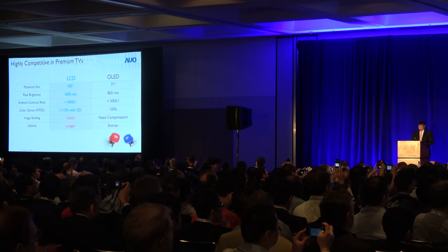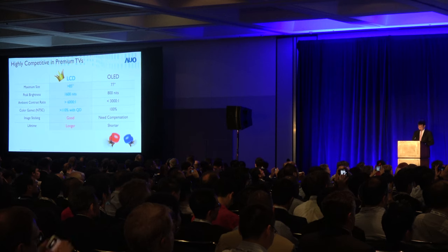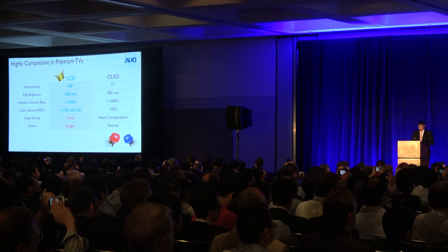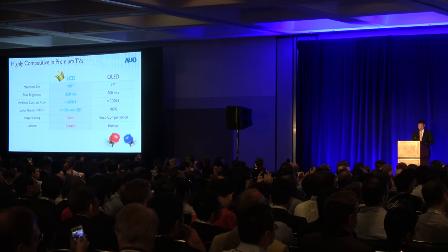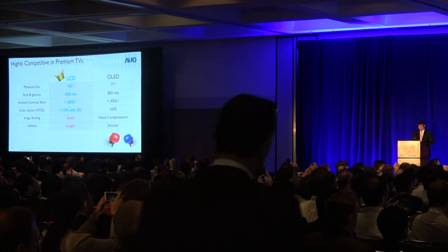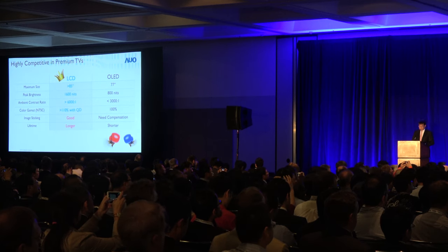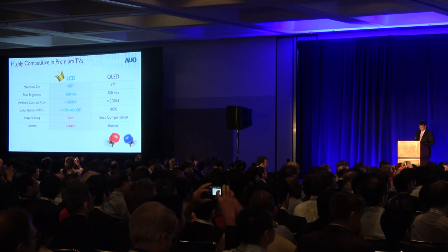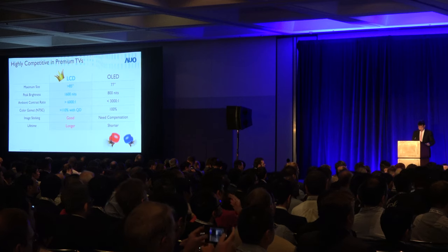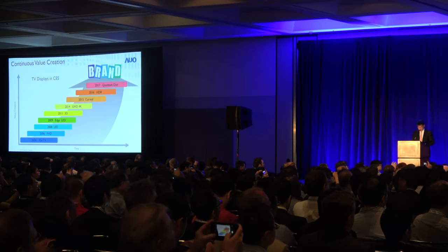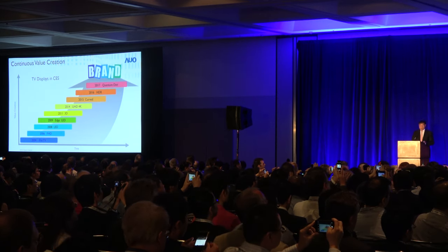In terms of picture quality, currently super-large-size LCDs in mass production are over 85 inches. The peak brightness and ambient contrast ratio will be double that of OLED. The colour gamut can reach 110% with quantum dot technology. Image burning is less of an issue in LCD. Furthermore, backlight components and liquid crystals of LCD have much longer lifetime than organic emitting materials used for OLED.